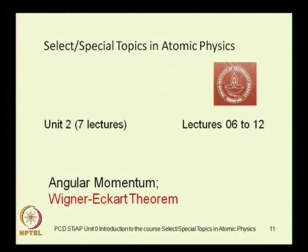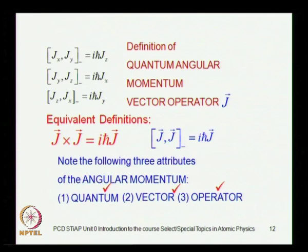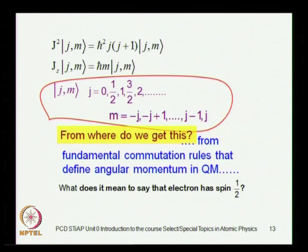In Unit 2, we will study angular momentum in quantum mechanics. Angular momentum in classical mechanics is simply r cross p, but quantum mechanics requires a different treatment of angular momentum. We will proceed to get the Wigner-Eckart theorem as well, first giving an appropriate definition of angular momentum in quantum mechanics and then using this definition to deal with the algebra of angular momentum.